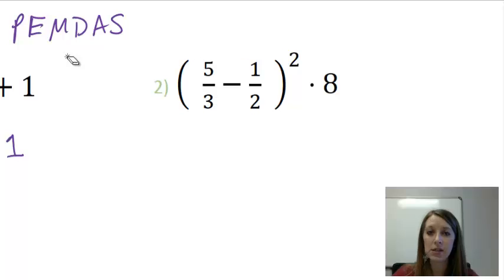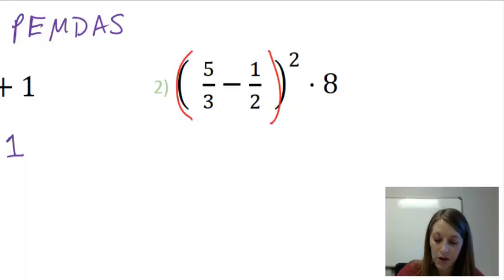What PEMDAS says to do is to work the inside of your parentheses first. So inside these parentheses, I need to subtract these fractions. To subtract fractions, we know we need a least common denominator. My LCD between 3 and 2 is 6, so I'm going to multiply my first fraction by 2 over 2, and I'm going to multiply my second fraction by 3 over 3.